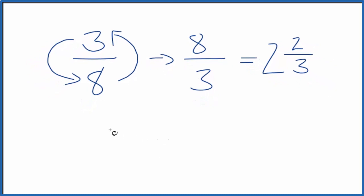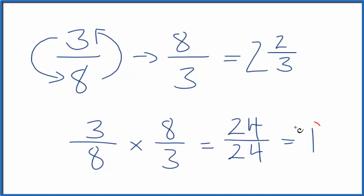Let's check our work. If we take the original fraction, the 3/8, and we multiply that by the reciprocal, 8/3, we should end up with 1 if we did it correctly. 3 times 8, that's 24, and 8 times 3, that's 24. So 24 divided by 24, that equals 1. So we did the first part correctly.